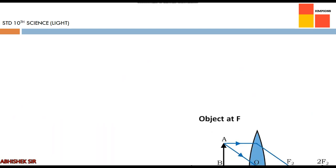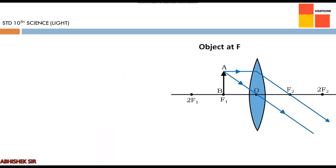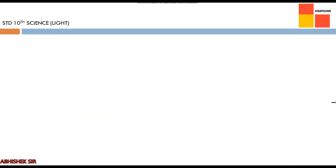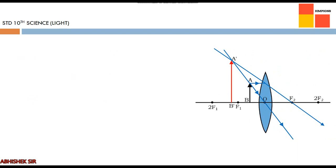Fifth case — object at f: the two rays are neither converging nor diverging, so they travel to infinity. We assume they meet at a point at infinity, forming a real, inverted, and highly magnified image.